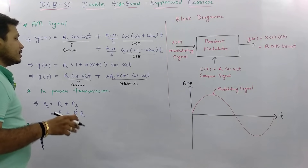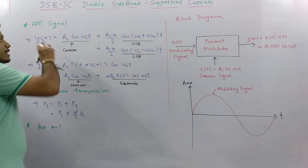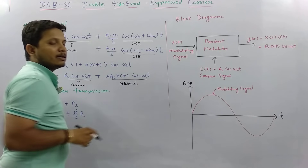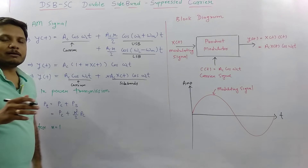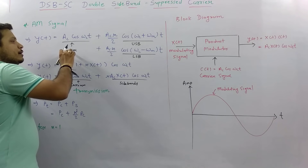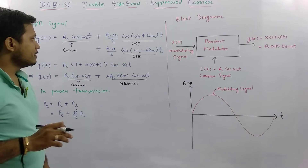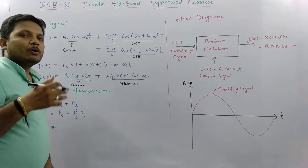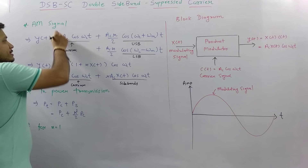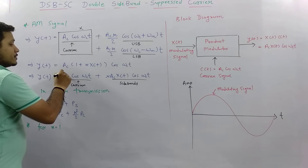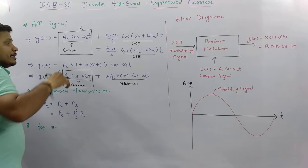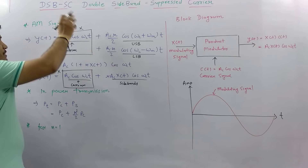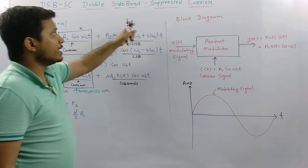When we talk about information, the carrier signal carries no information — information is only present in the sidebands, specifically the upper sideband and lower sideband. So in an AM signal we are wasting power by transmitting the carrier signal. This is a major drawback of AM. In DSBSC we suppress the carrier component — we don't send it. DSBSC is essentially an AM signal without carrier.